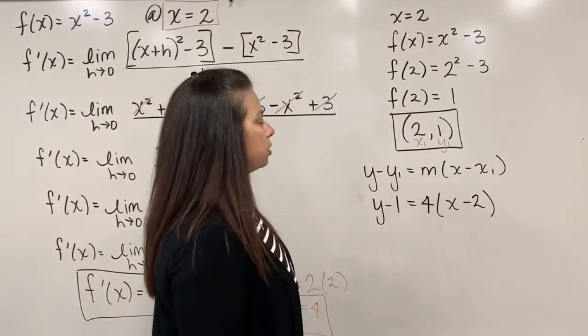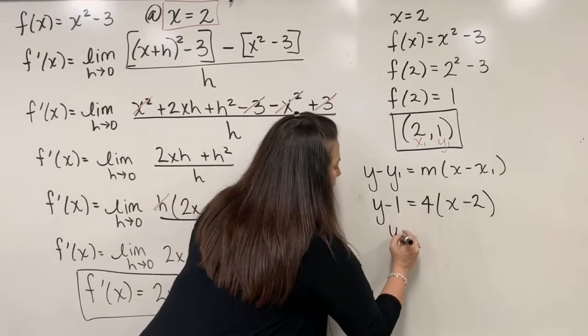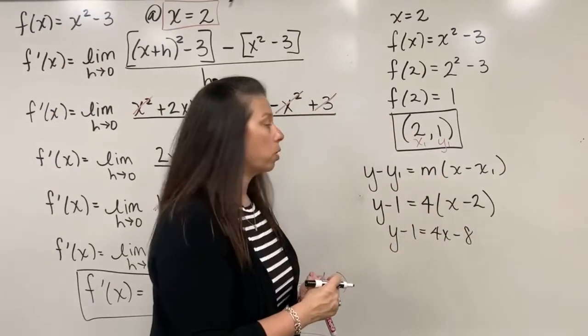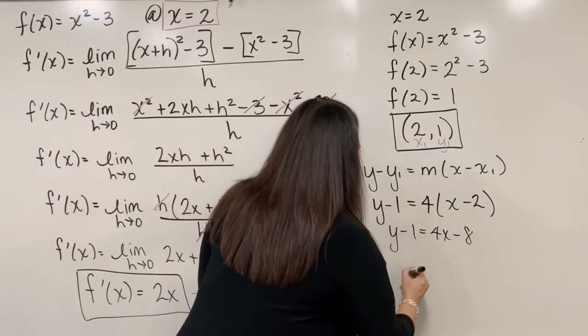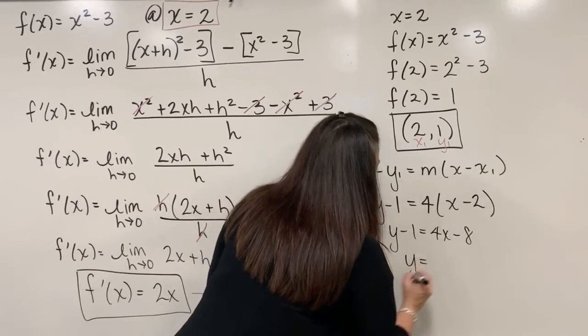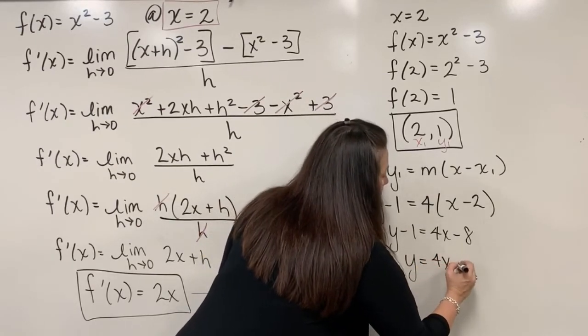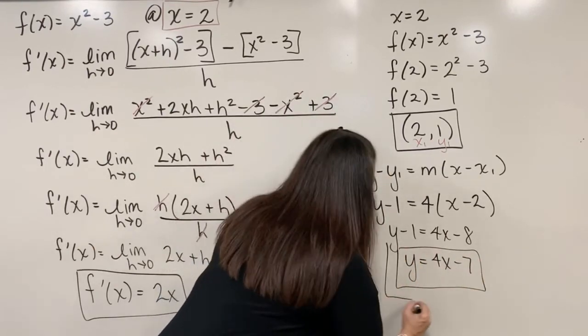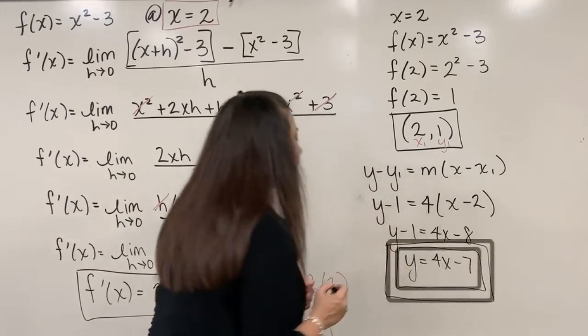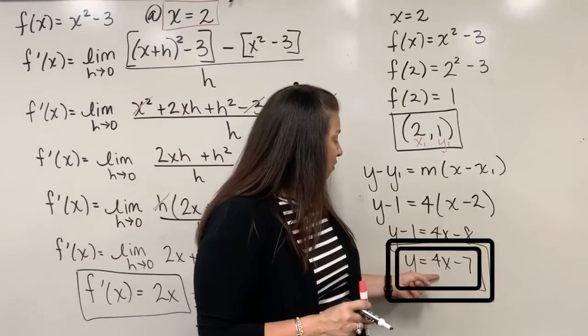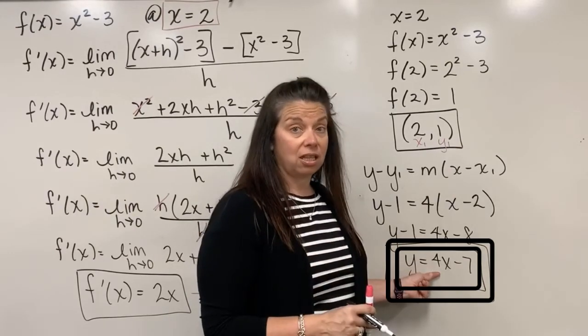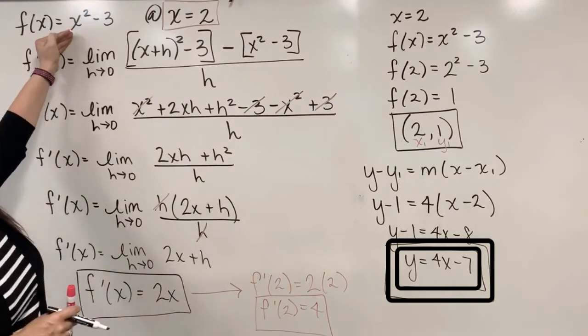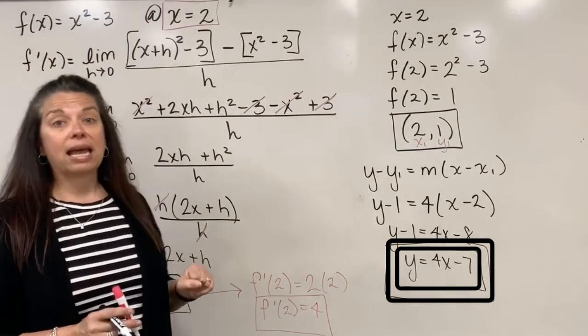And then now all I need to do is just simplify this equation. So I have y minus 1 equals 4x minus 8. When I distribute the 4 onto both of those terms, add my 1 to both sides. So I end up with y equaling 4x minus 7 when I add my 1. So it turns out now this, I'm going to double box this because y equals 4x minus 7 is in fact the equation of a tangent line to the original function that we started with x squared minus 3 at 2, at x equals 2.